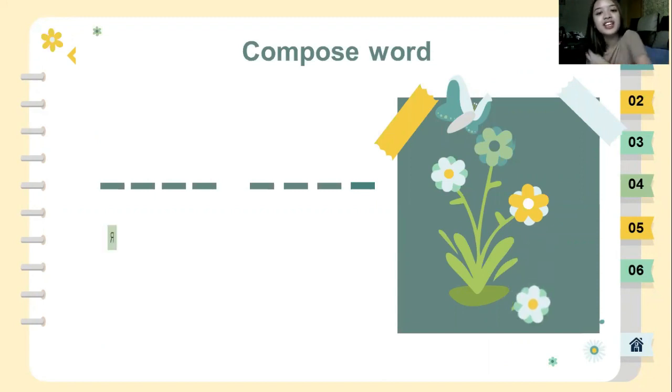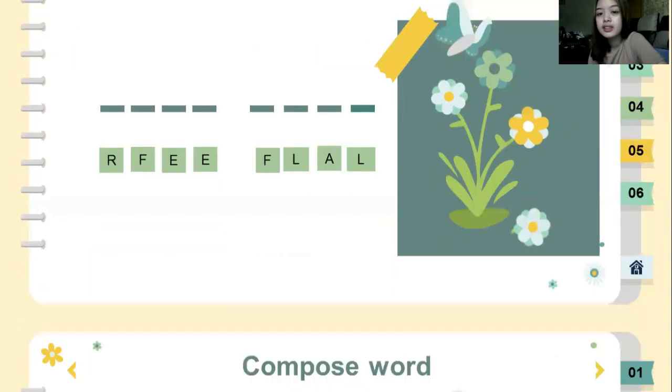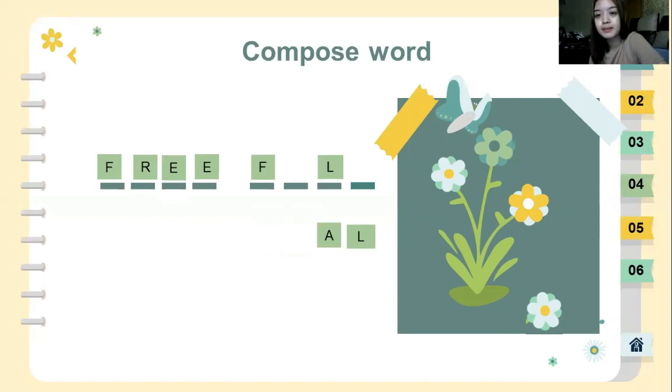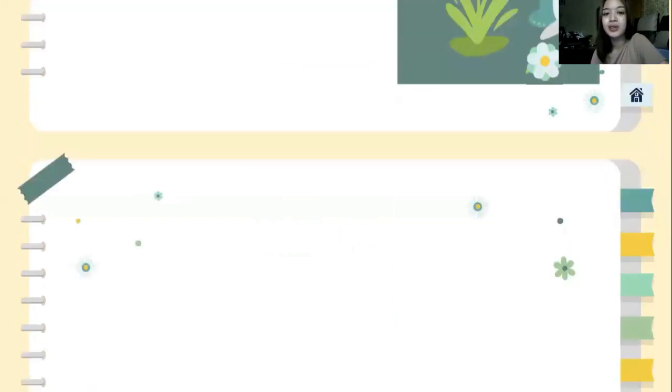For the first word the letters are R, F, E, E, and for the second word we'll have letters F, L, A, L. So do you have any idea? So the answer is free fall. So we're going to talk about free falling bodies.